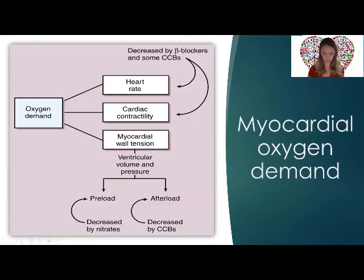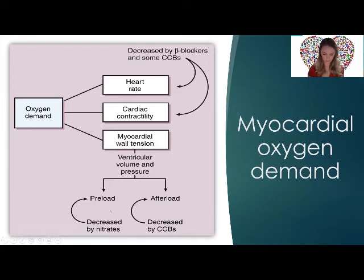This diagram shows myocardial oxygen demand and the factors affecting it: cardiac contractility, myocardial wall tension, and heart rate. Any condition associated with increased heart rate, increased cardiac work such as exercise, or increased myocardial wall tension increases oxygen demand. Changes in ventricular volume or pressure due to preload or afterload changes also increase oxygen demand. Heart rate and contractility can be decreased with beta-blockers and calcium channel blockers, while preload can be reduced with nitrates and afterload with calcium channel blockers.